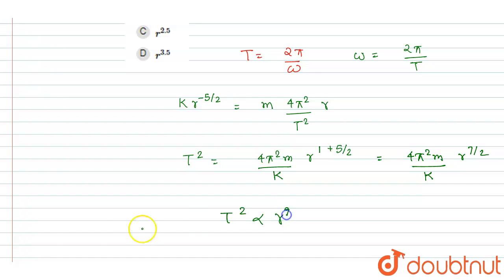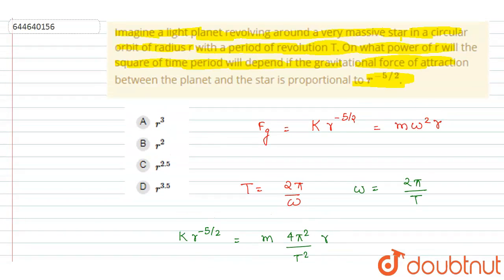Here r to the power 7 by 2. You could see that T squared is proportional to 7 by 2, that is 3.5. So the correct option here will be r to the power 3.5. Thank you.